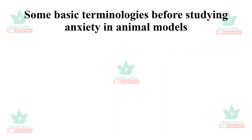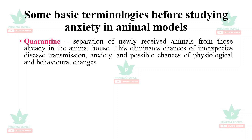First is quarantine: the separation of a newly received animal from those already in the animal house is called quarantine. This eliminates the chances of interspecies disease transmission, particularly anxiety, and possible chances of physiological and behavioral changes.